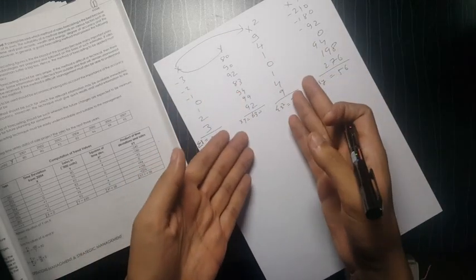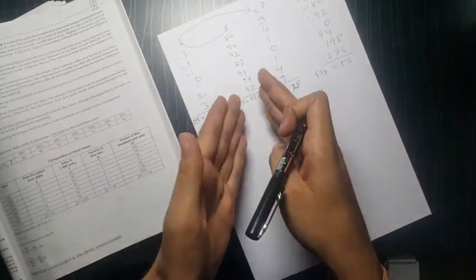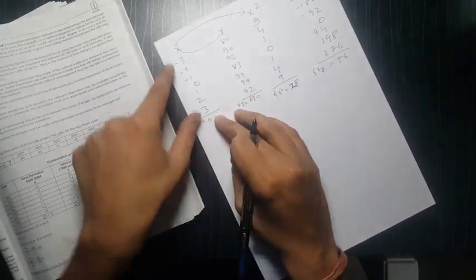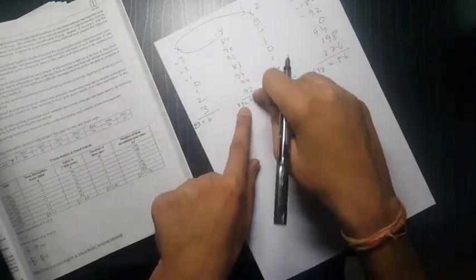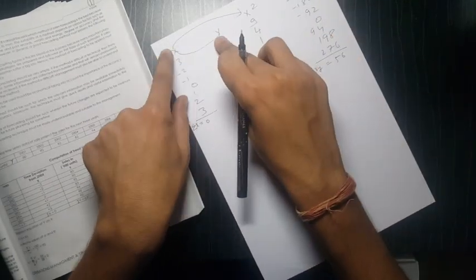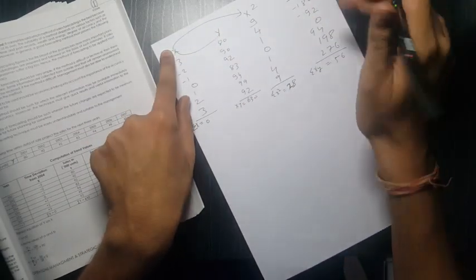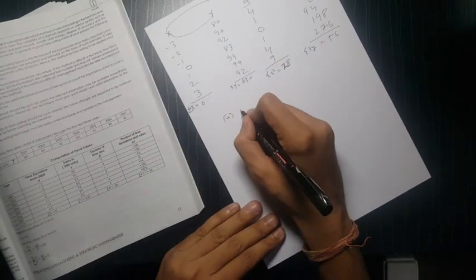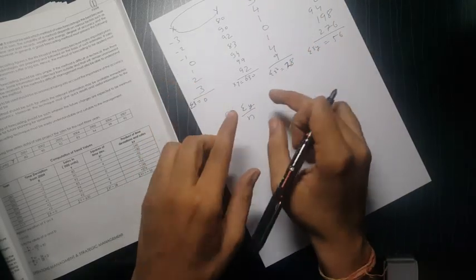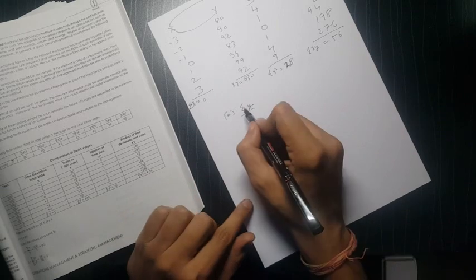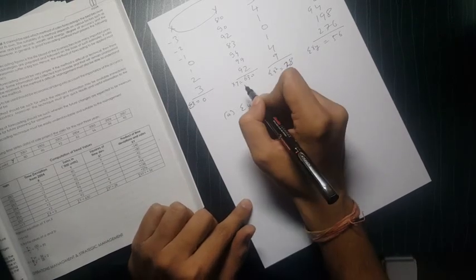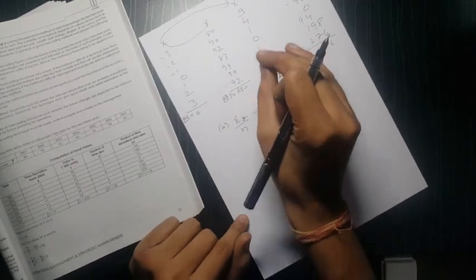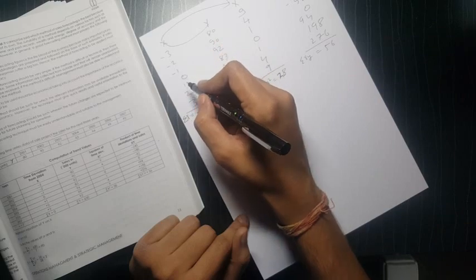And now the second one xy. Do xy, so multiply x with y. So minus 240, likewise you carry on: minus 92, 0, 94, 198, 276. Now do the total. Submission xy is 56, submission x square is equal to 28. N yani N means number of years: 1, 2, 3, 4, 5, 6, 7. N is equal to 7, this is the 7 year data.